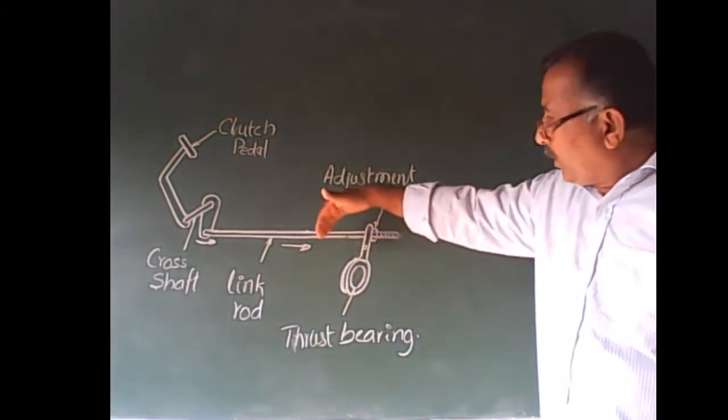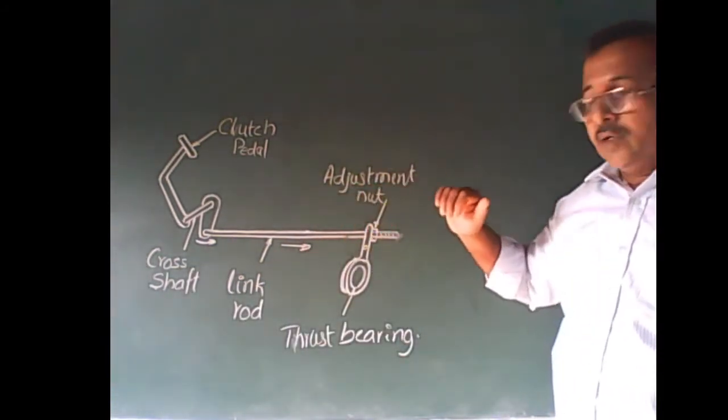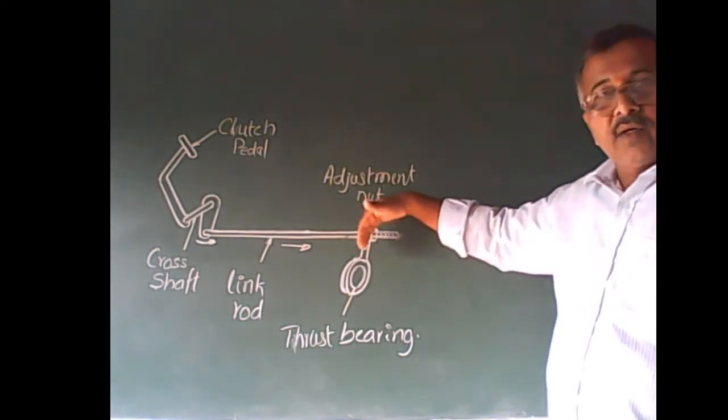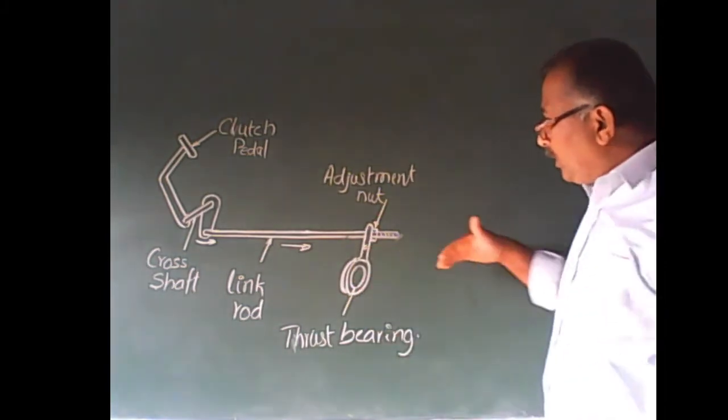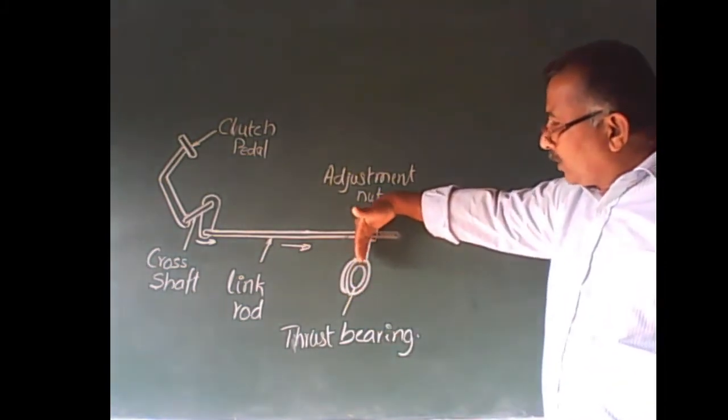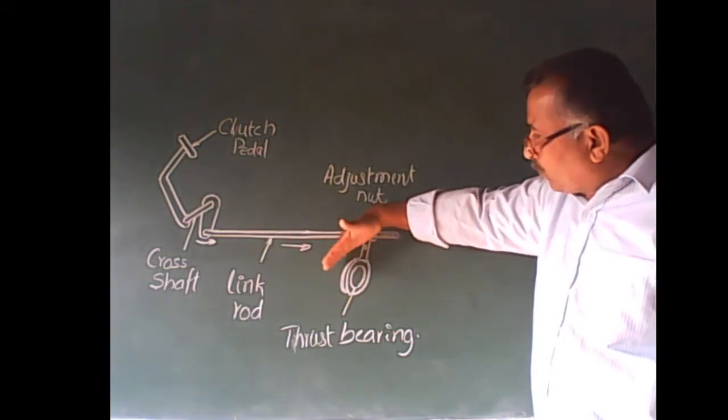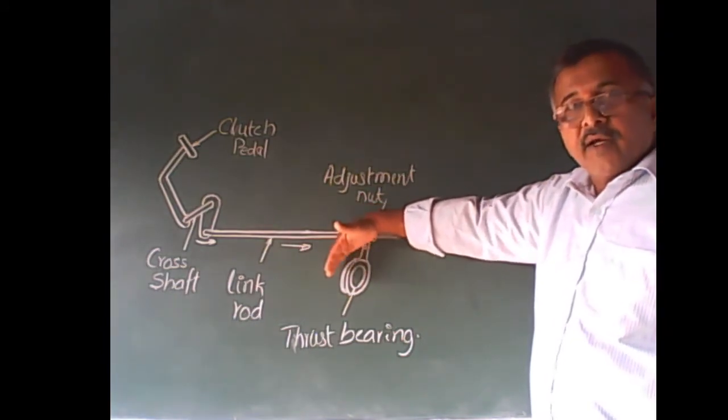The backward movement of the link rod operates the fork. Because of pivot pin or fulcrum pin, the fork backward movement forces the release bearing forward.